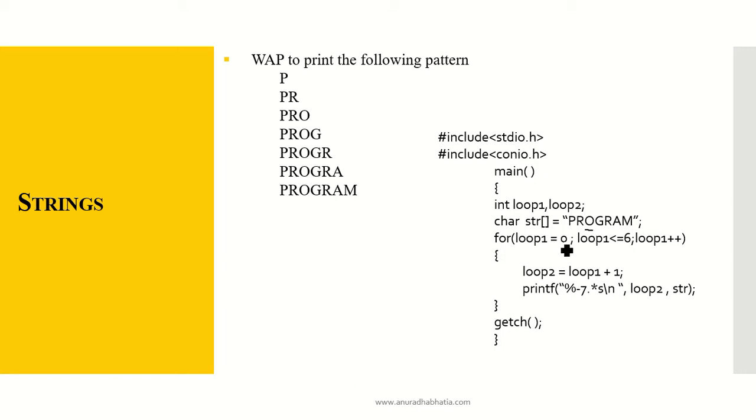Now loop1 starts with 0 less than or equal to 6, loop1 plus plus. As I know there are less because I am starting from 0 so it will go to 7. Loop2 equals loop1 plus 1. So whatever is this, this is 0 initially. So it will be this 0th location. But I want to print the first element. So now you will see how it is.